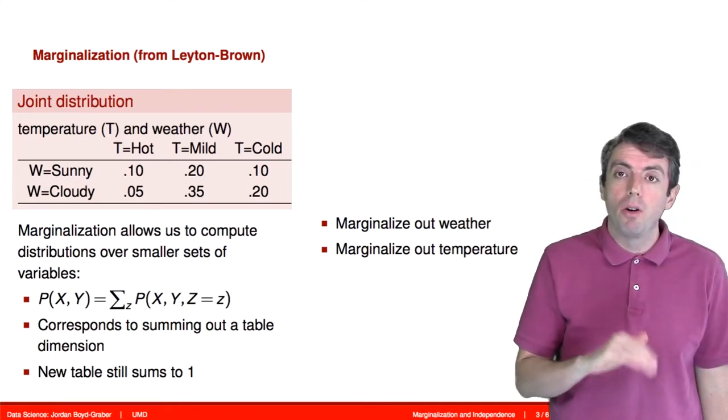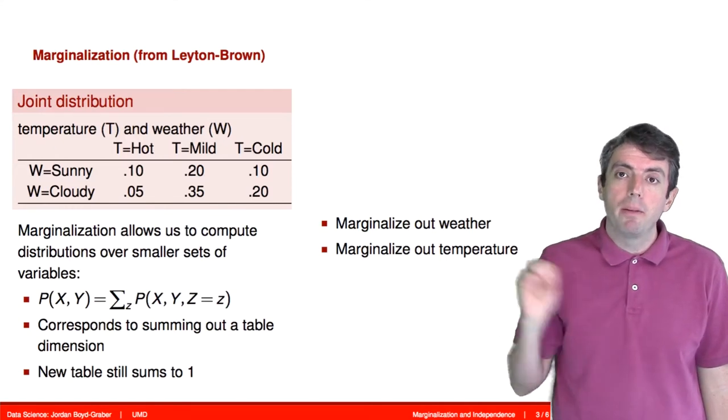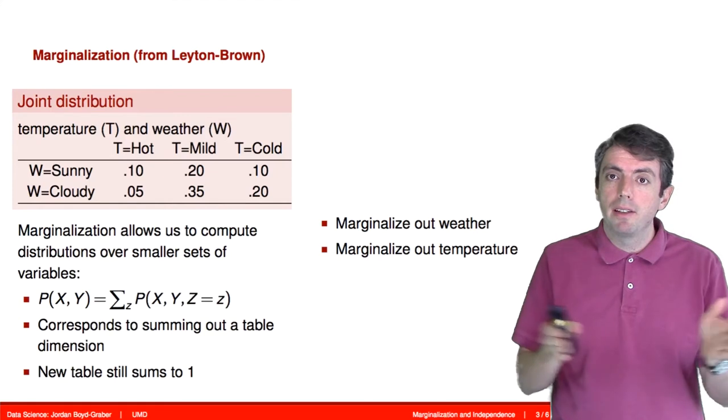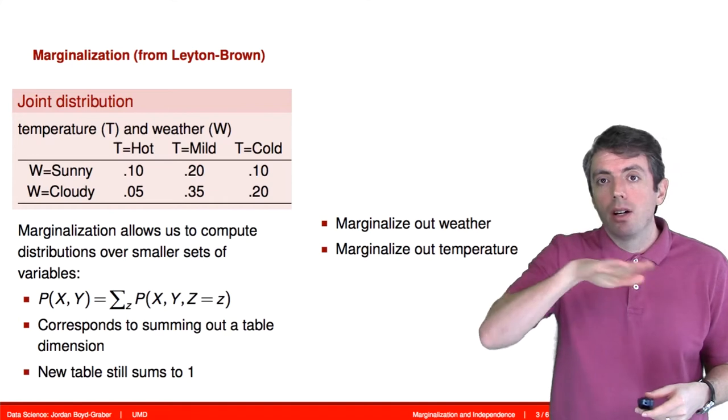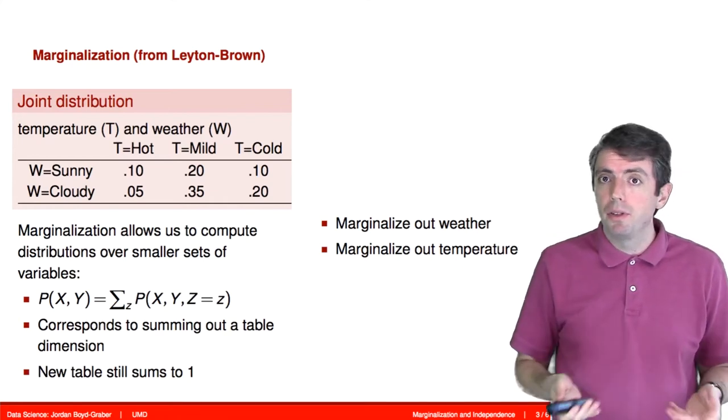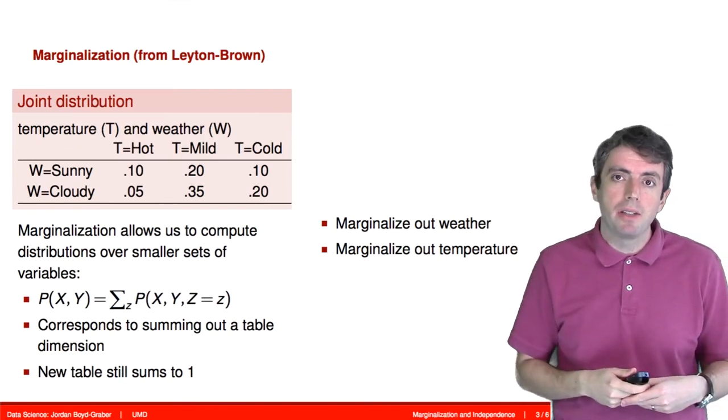So here's an example of marginalization that I borrowed from someone at the University of British Columbia in Vancouver, Canada. Here we have a distribution over whether it's going to be sunny or cloudy and what the temperature is going to be. If we write our joint distribution in something that looks like a 2x2 table, marginalization corresponds to either summing out over a row or summing out over a column to produce a new distribution over the random variable that we actually care about.